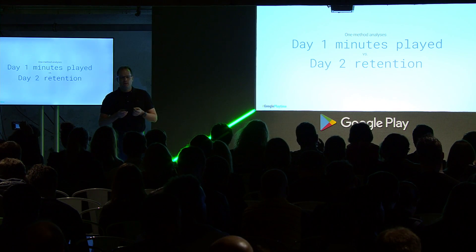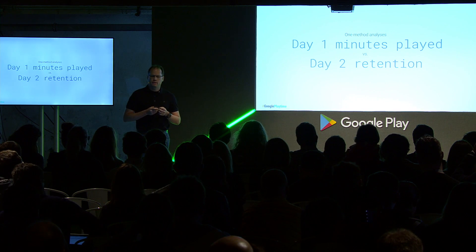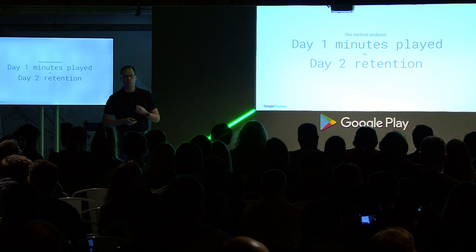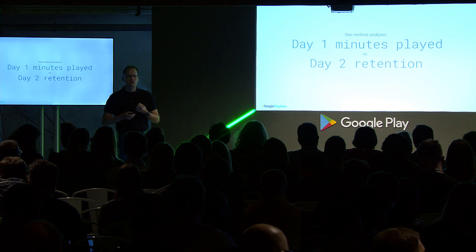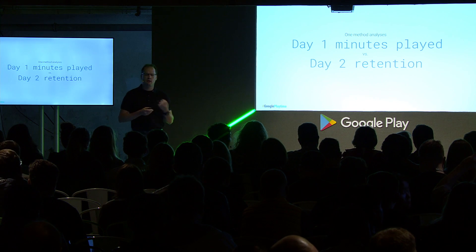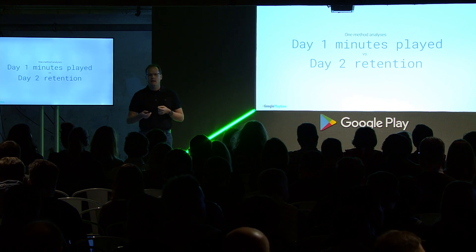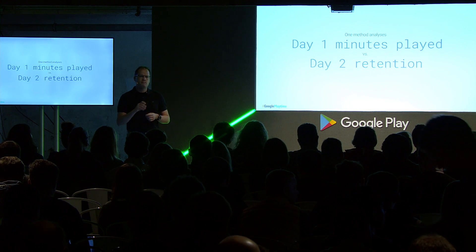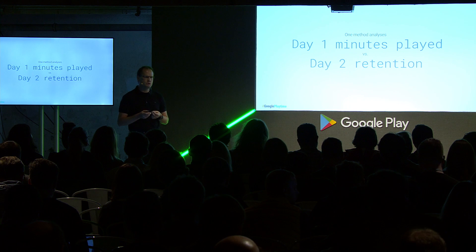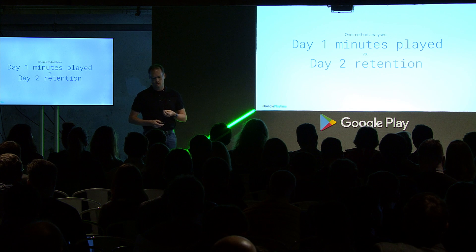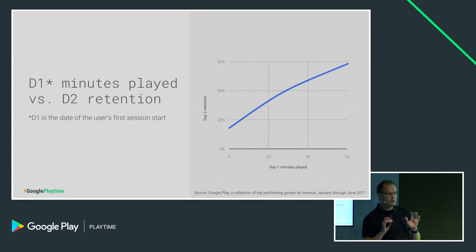When I was on the developer side looking at installs performance and retention on the first day, generally we would look at the level that users got to or the tutorial checkpoint they reached. However, those tend to be game-specific metrics and aren't really useful for comparing across games. A metric we've been able to develop at Google Play, which is much more of an apples-to-apples comparison, looks at the amount of time users spend on their first day and compares it to day two retention rates. For the top 200 IAP games, you end up with a curve that looks like this.